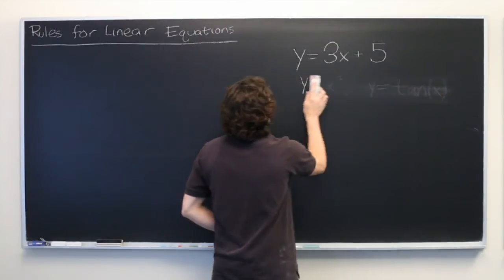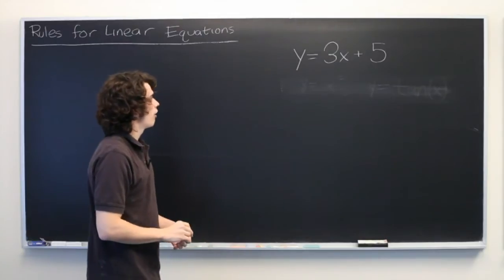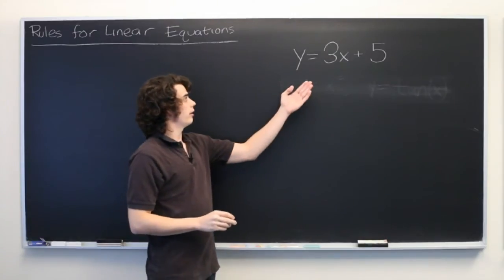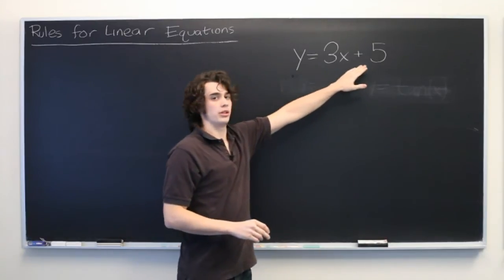So, what are some of the rules associated with linear equations? First, if you're going to manipulate an equation in any way, anything you do to one side of the equation must also be done to the other.